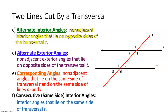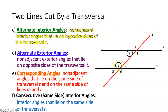The last set of angles are consecutive, or same-side interior angles — interior angles that lie on the same side of transversal T. We look inside the two lines for angles on the same side. Angles 7 and 8 are consecutive interior angles — same side of the transversal, inside the two lines. Same with angles 2 and 3 — on the same side of the transversal and inside the two lines, therefore consecutive interior angles.